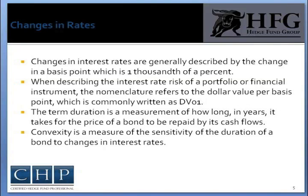Changes in interest rates are generally described by the change in a basis point, which is 1/1000th of a percent. There are 1,000 basis points for every percent change in yield. When describing the interest rate risk in a portfolio or financial instrument, the nomenclature refers to the dollar value per basis point, which is commonly written as DV01. This type of risk could come in the form of directional exposure due to speculation on interest rate movements, or present value exposure due to assets that have future values.